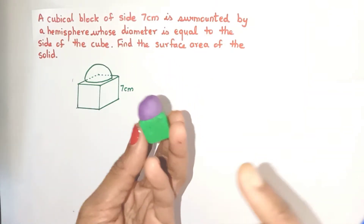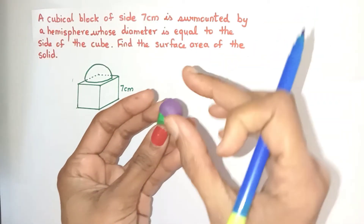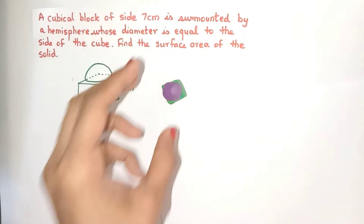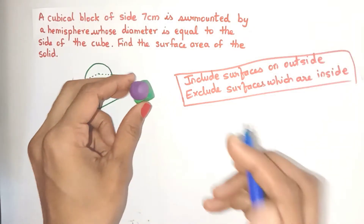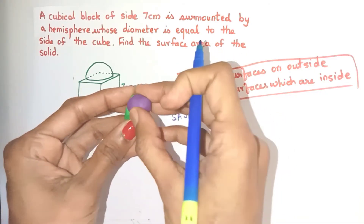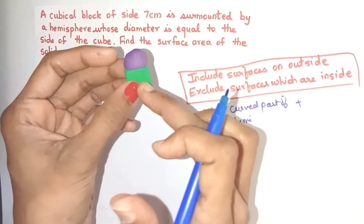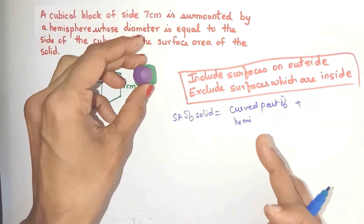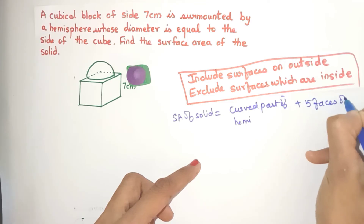Here is the last example. We have a cube of size 7 centimeters, and on top of it a hemisphere whose diameter is also 7 centimeters is placed. We have to find the surface area of the final solid. Applying our guideline: the curved part of the hemisphere is outside, so it's included. All five faces of the cube are also outside — even the bottom face is still part of the surface.